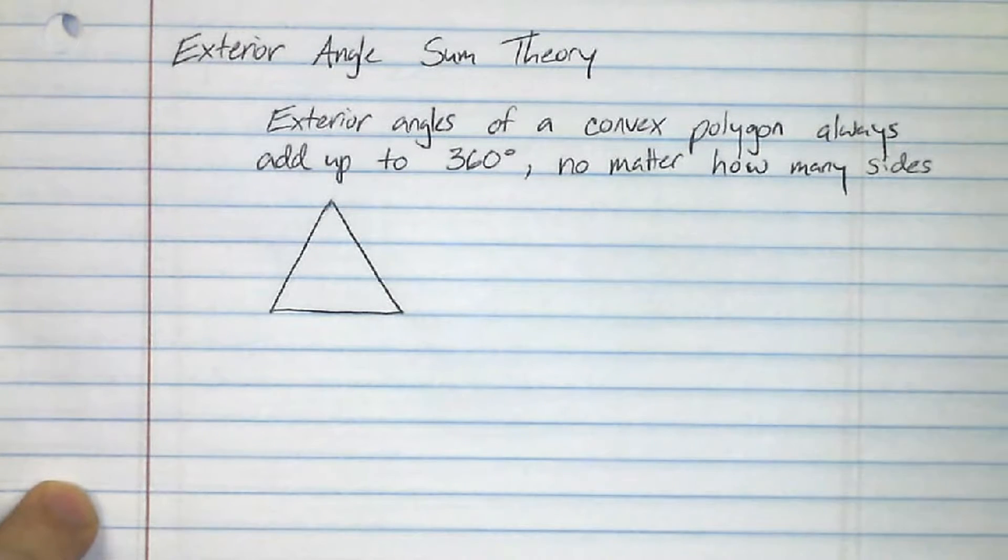So the last thing we're going to go over is called the exterior angle sum theory. Now, this basically says the exterior angles of a convex polygon, they always add up to 360 degrees. It doesn't matter how many sides it has, anything from a triangle to a 20-sided figure. It always adds up to 360.